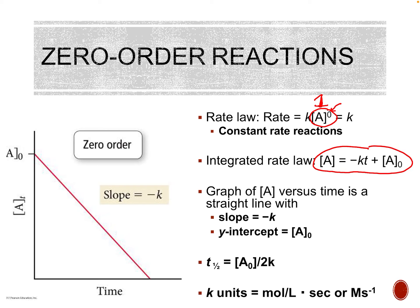Our integrated rate law for zero order is: concentration of A equals negative KT plus the concentration at time zero. Don't confuse the superscript zero meaning zero order with subscript zero, which means our starting concentration. Thinking of this as y = mx + b: our concentration at time zero is our y-intercept, T is our x, negative K is our slope, and concentration at any time is our y value. When we graph concentration of A versus time, that gives us a straight line for zero-order relationships, with slope equal to negative K and y-intercept equal to concentration of A at time zero.